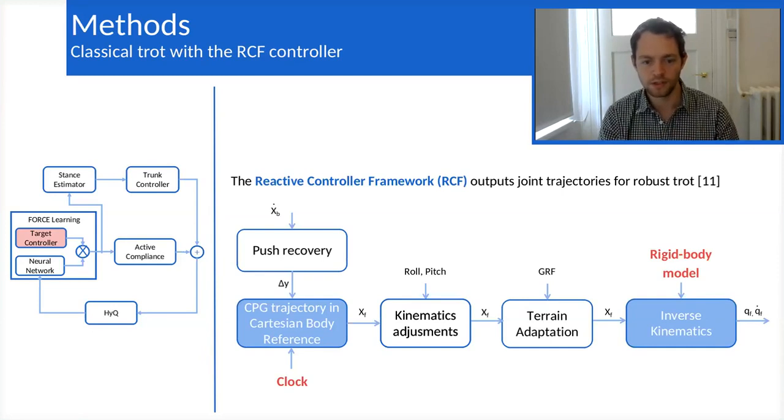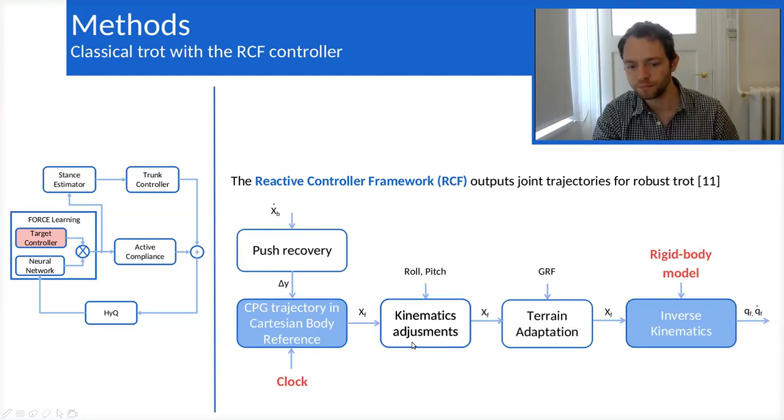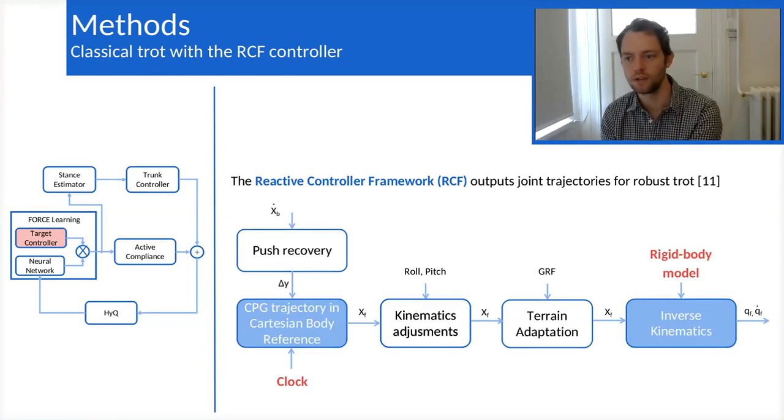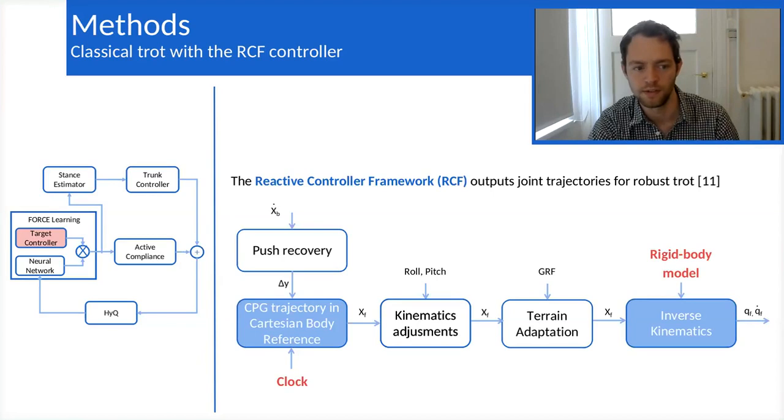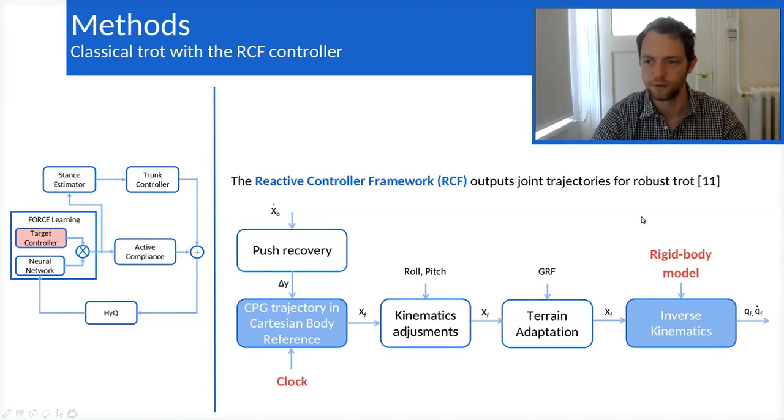In our work, our goal is not to reproduce completely the dynamics of the reactive controller framework. As you can see, we are not using the same inputs, but the goal is really to show and demonstrate that closed-loop locomotion can be realized on a real robot, not only in simulation, and that it needs external stabilization. So it makes sense that those inputs are quite different from the neural network.